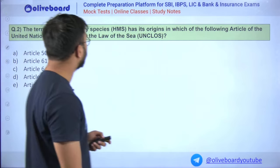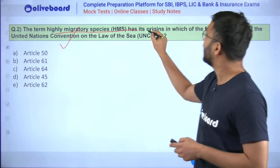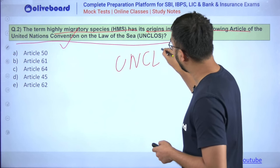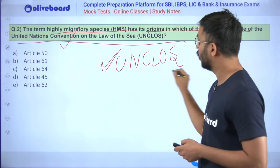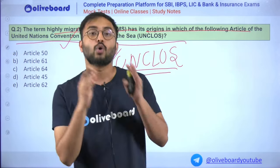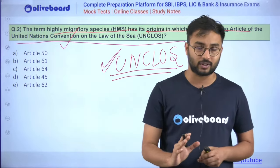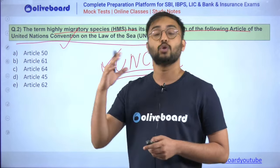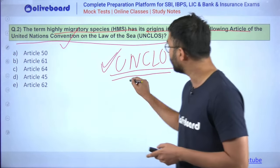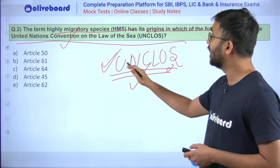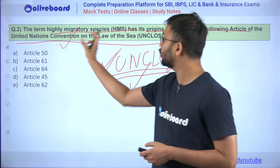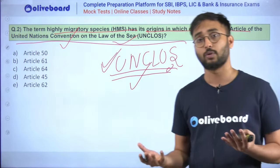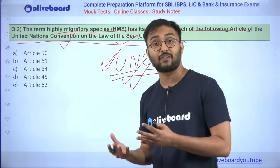Now the term 'highly migratory species.' The question asks: the term has its origin in which article of the United Nations Convention on the Law of the Sea (UNCLOS)? UNCLOS is the UN body that determines all laws, rules, and boundaries for international waters, the use of marine resources, and economic activities in international waters — issues like the South China Sea dispute.